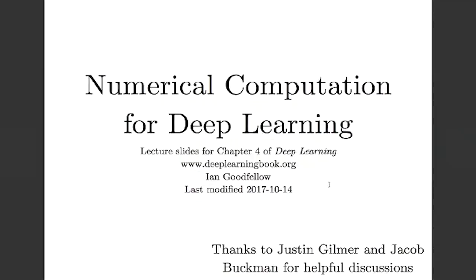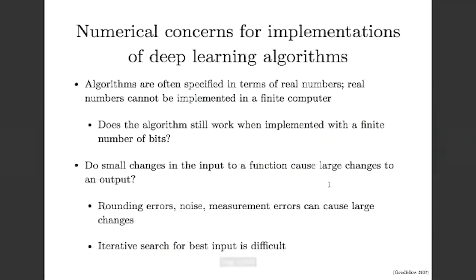Today's topic is numerical computation for deep learning. The basic idea is that we need to be very careful about how we handle real numbers in a few different contexts. One is if we use an algorithm that has to do careful representation of real numbers with a finite number of bits. Real numbers like pi have infinitely many digits, and when we represent them in a computer we usually use 32-bit floating point numbers as an approximation. Using 32 bits to represent something with infinitely many digits can cause errors, and we'd like to minimize the damage to our program.